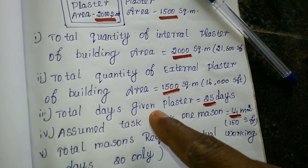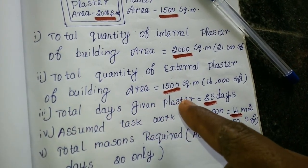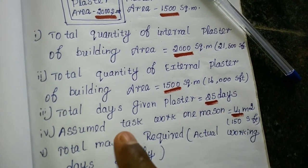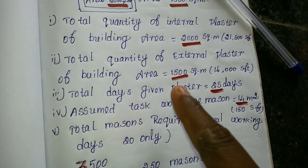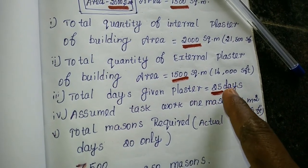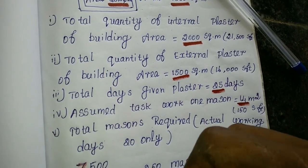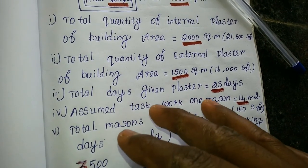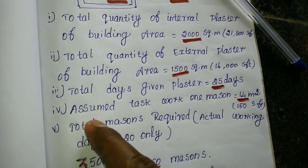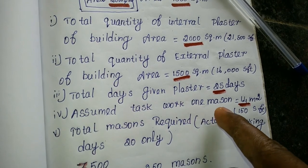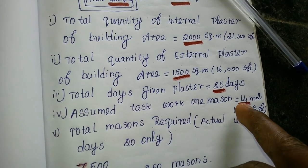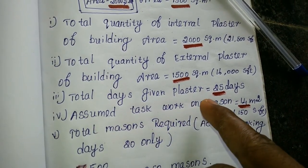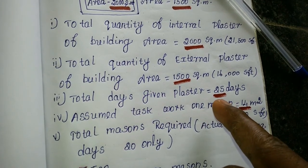Total base given plaster. How much plastering can be done in 25 days? We can finish the plastering. Assume task work: 14,000 square meters.